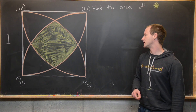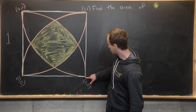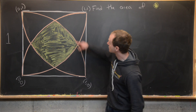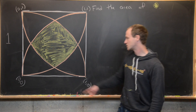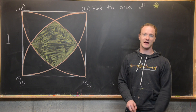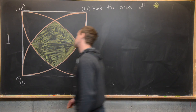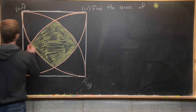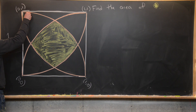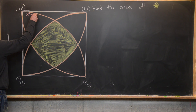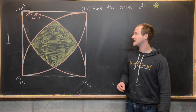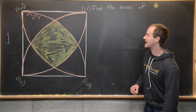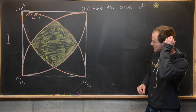Let's look at the equations of these circles. This circle from (1, 0) to (0, 1) is a circle of radius one centered at the origin, so its equation is x² + y² = 1.